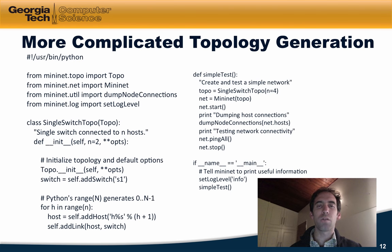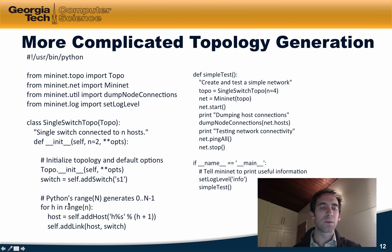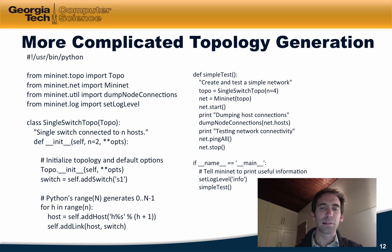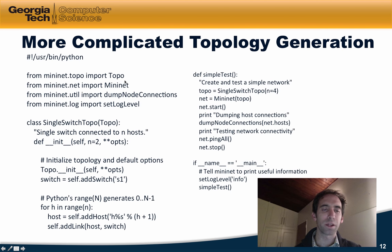Finally, here's an example of a more complicated topology generation. You can see that you can use the addHost and addLink functions inside something like a for loop, which allows you to create more complicated topologies by taking advantage of Python's scripting capabilities. There is a class called SingleSwitchTopo, which is a subclass of the Topo class imported at the top.